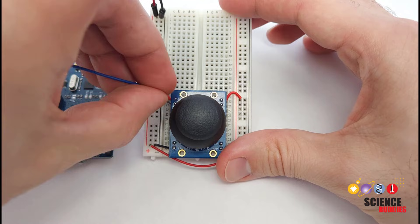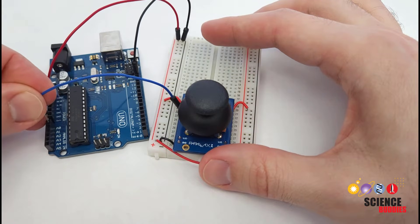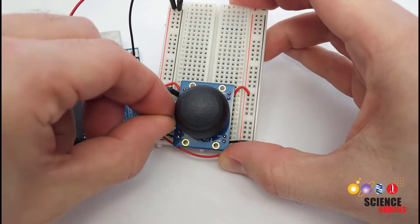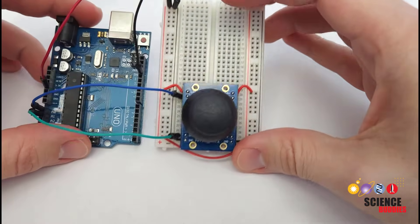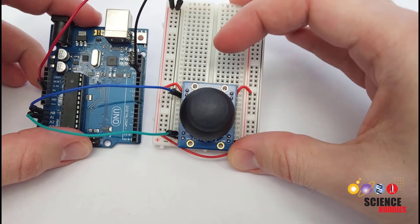I am just going to take a jumper wire for the left-right output and I'm going to connect that to Arduino analog pin A0. Then I'm going to take one for the up-down output and connect that to Arduino analog pin A1. Then we are going to go take a look at the computer and write some code to get the reading from this joystick.